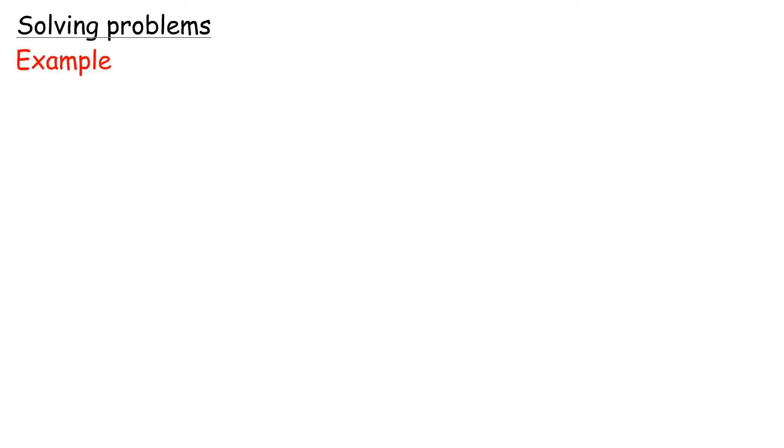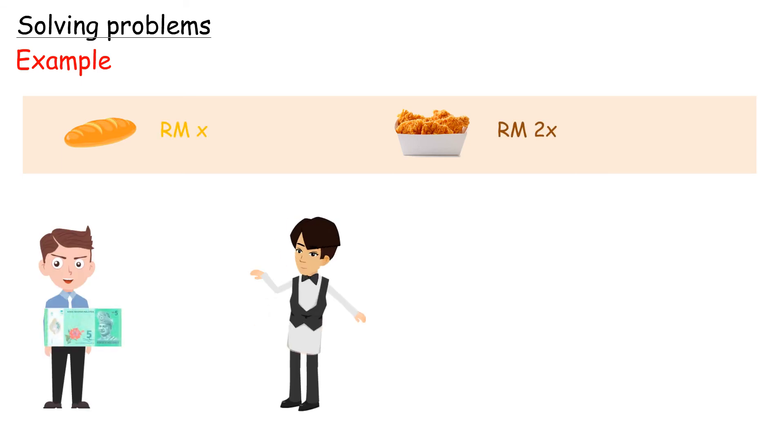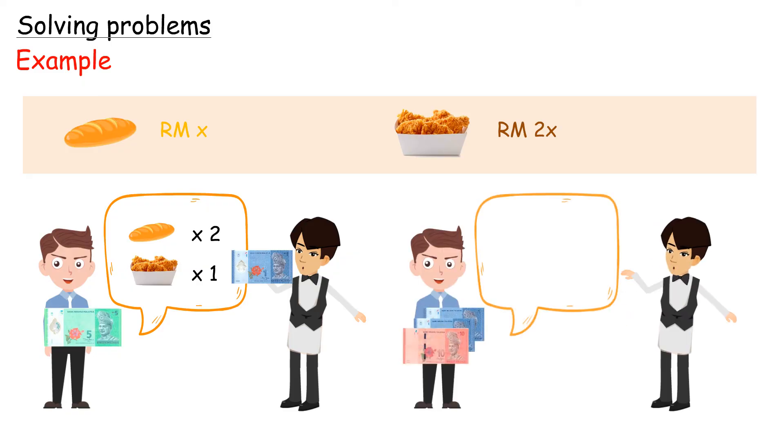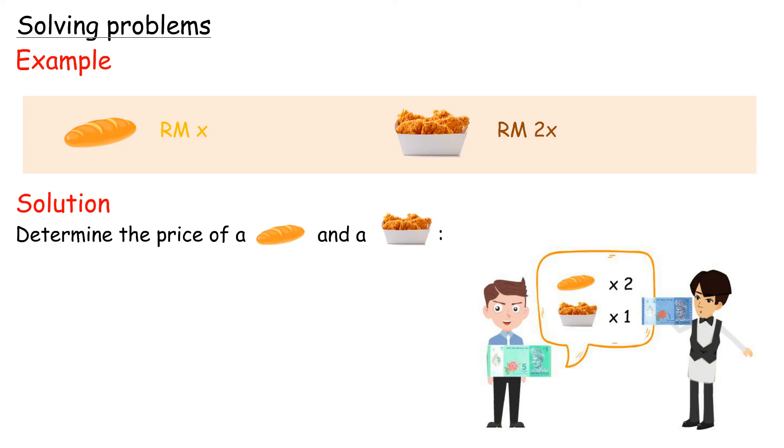Solving problems. Example. The price of a fried chicken at a school canteen is twice the price of a bun. With RM5, Asman bought two buns and a piece of chicken. The balance of RM1 is saved. If Asman has RM12 and decides to buy the same number of buns, how many pieces of fried chicken will he be able to buy? Solution. Determine the price of a bun and a chicken. 4x equals 4, x equals 1. Thus, the price of a bun is RM1 and the price of a piece of chicken is RM2.